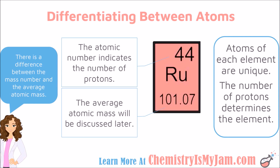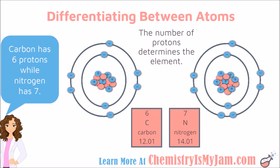A quick glance at the periodic table will tell you that there are over 100 different types of elements, and each one has a slightly different atom. What is the difference between those different atoms? The difference is the number of protons. The number of protons is what determines which element you are dealing with. For example, ruthenium has 44 protons. If you change the number of protons, you are changing the element. We call this number the atomic number. You will also see on the periodic table the average atomic mass at the bottom of each block, which we will talk about later.